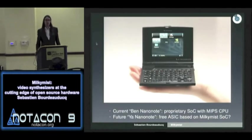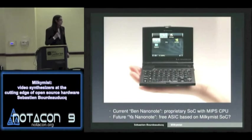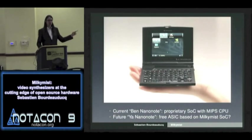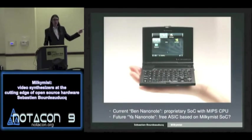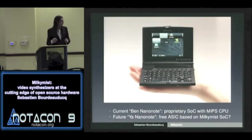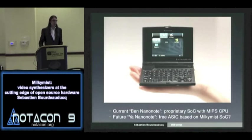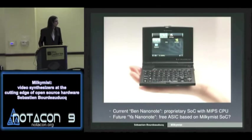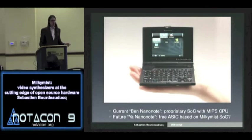Another field of possible application for the Milky Mist system-on-chip is the Nanonote — a small laptop really the size of a cork, manufactured by the same people who manufacture the Milky Mist. Right now it's based on a proprietary system-on-chip using a MIPS CPU, and we're thinking about switching it to the Milky Mist system-on-chip design — maybe after the MMU is done so it can run fully-fledged Linux.